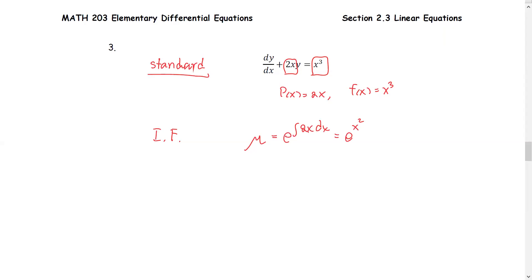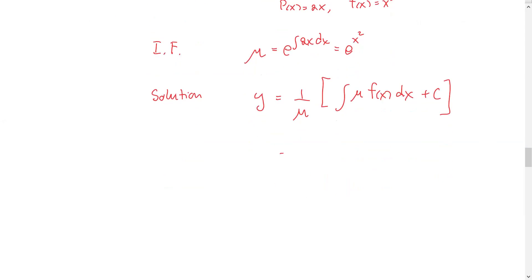Now we're going to find the solution. So y equals 1 over mu integral mu times f(x) with respect to x and then plus C. So the mu is 1 over e to the x squared and then integral e to the x squared. The function f(x) is x to the third power with respect to x and then plus C.